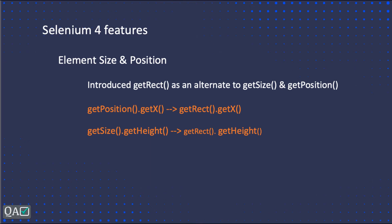Welcome back to our Selenium 4 series on features and enhancements. Today we are going to see a method that Selenium 4 introduced as an alternate to existing methods, and we'll see the benefit of using that method. The new method Selenium 4 introduced is the getRect method, which is introduced as an alternate to both getSize and getLocation. Both getSize and getLocation are still present in Selenium 4 as well.